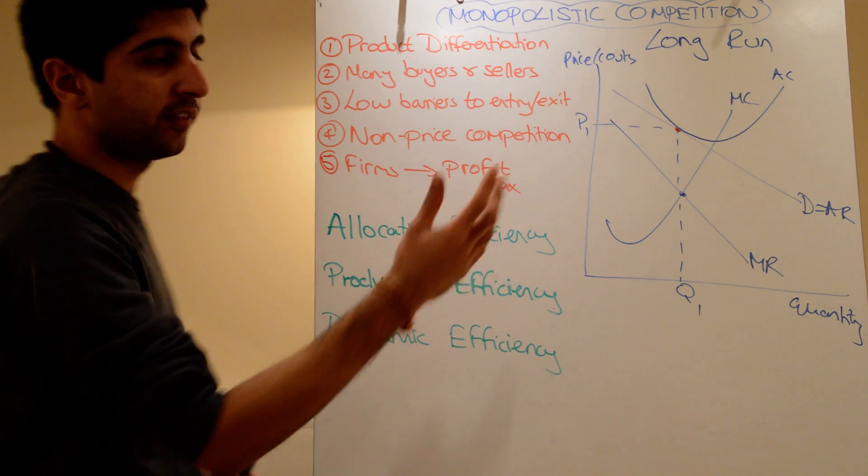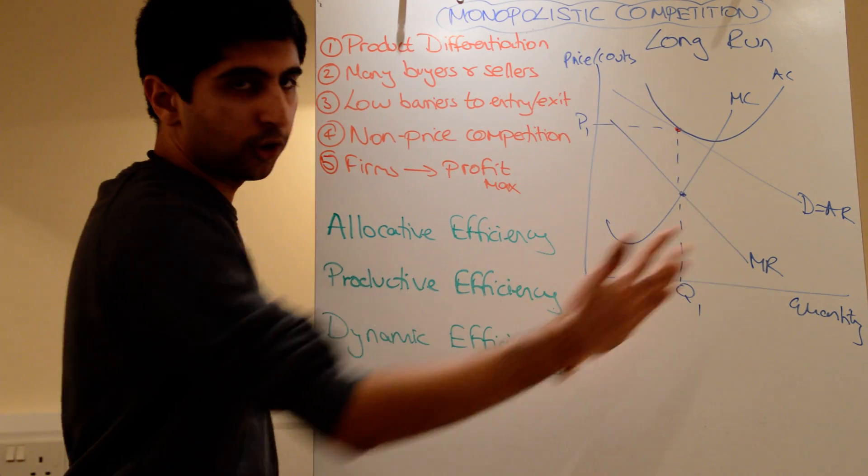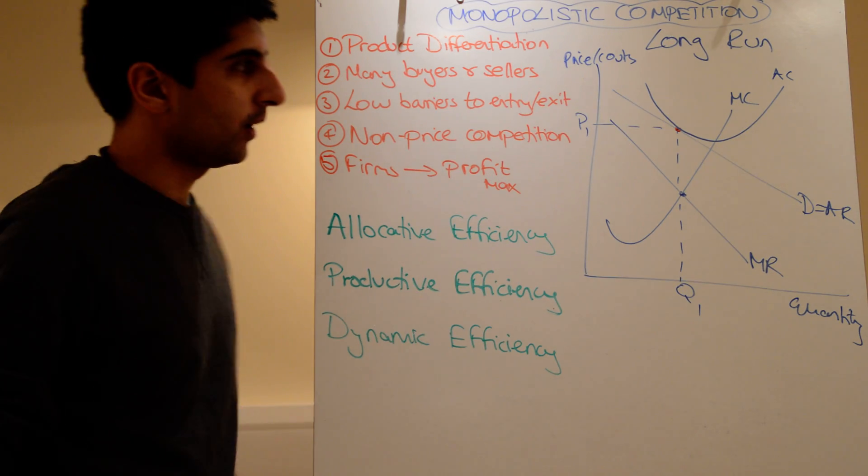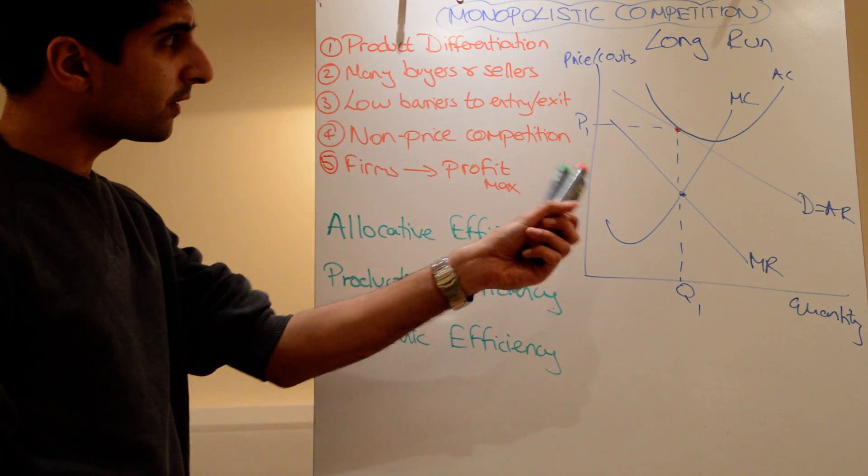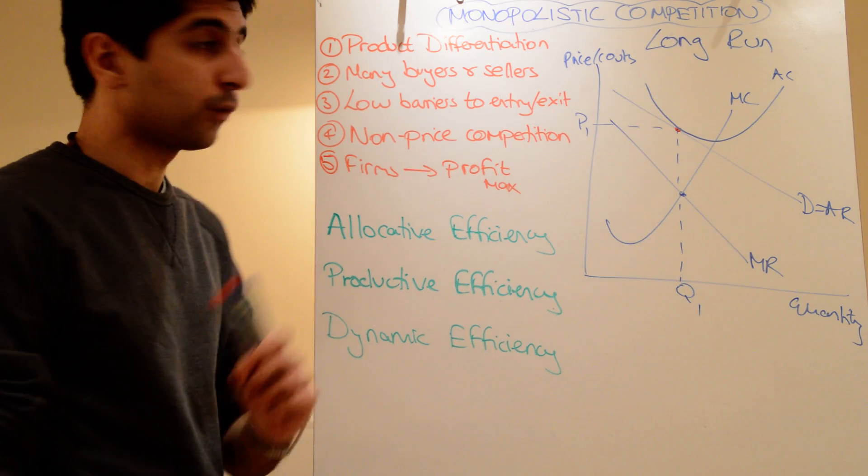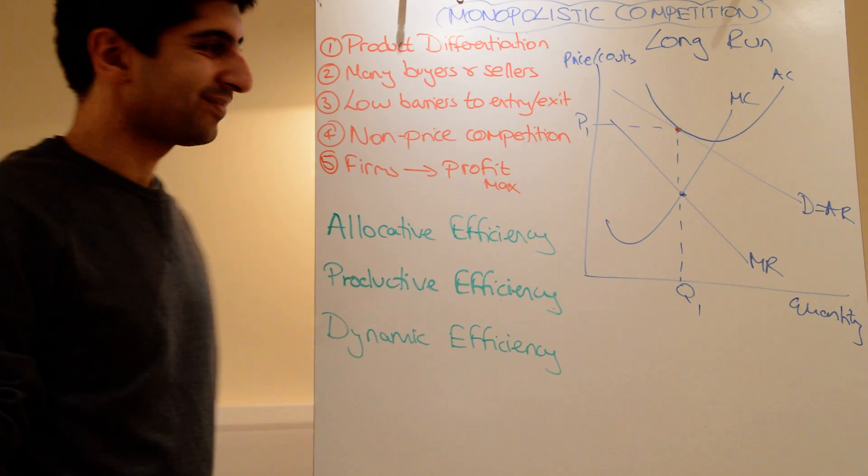It makes the point: normal profit in the long run, even with downward sloping demand curves, average revenue and marginal revenue curves. So that's monopolistic competition in the long run, defined by normal profits.